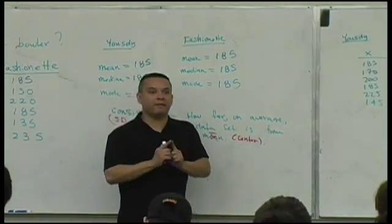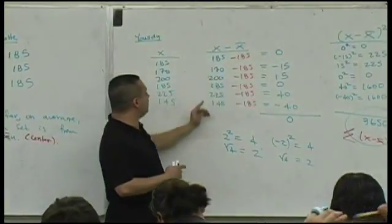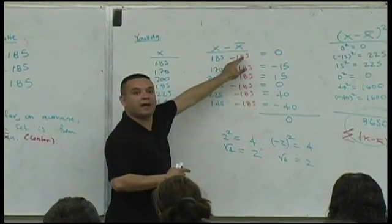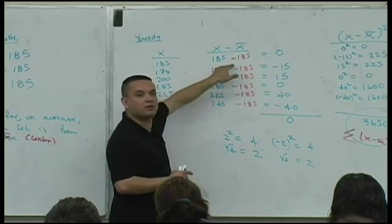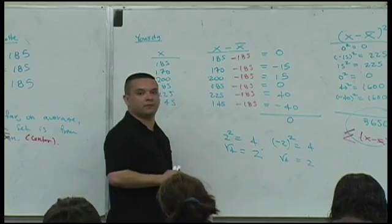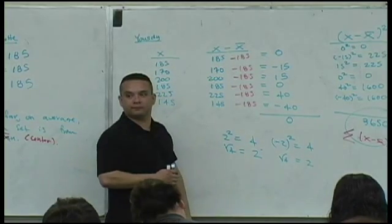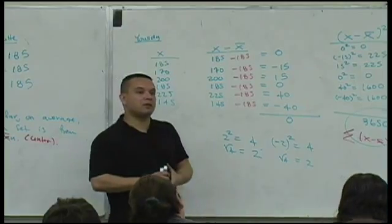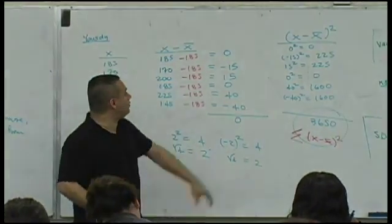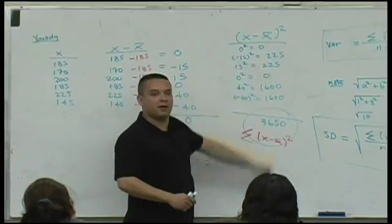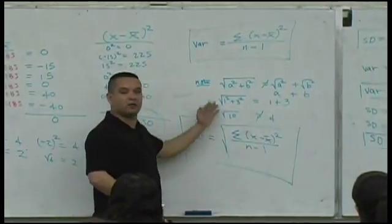How far is the difference? You take the data set, subtract it from that 185. Every value subtract from 185. Anybody have any other questions? Don't forget though, square one, make it positive. Undo the squaring by taking square root.